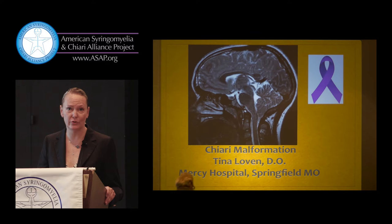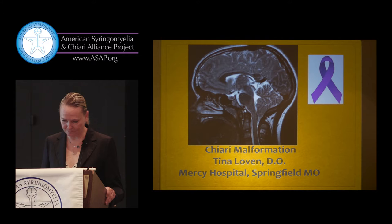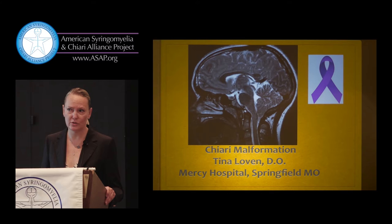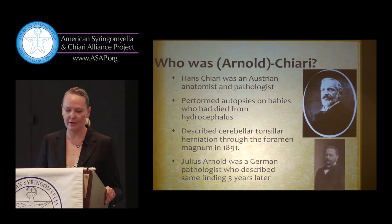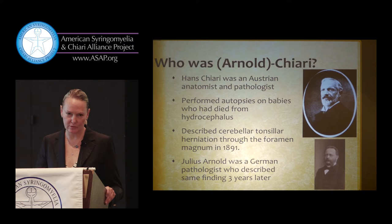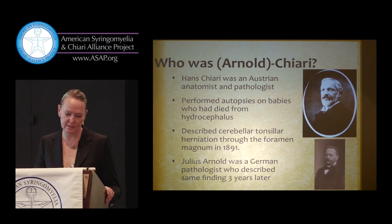Just to start off with some basic concepts on what is the Chiari malformation — there's a lot of different terminology that you see in the literature and on the internet. So just wanted to go over some basic anatomy and concepts. Hans Chiari was an Austrian anatomist and pathologist who performed autopsies on babies and noticed this anomaly of the very back part of the brain called the cerebellum herniating into the foramen magnum, which is the large opening into the back of the brain.